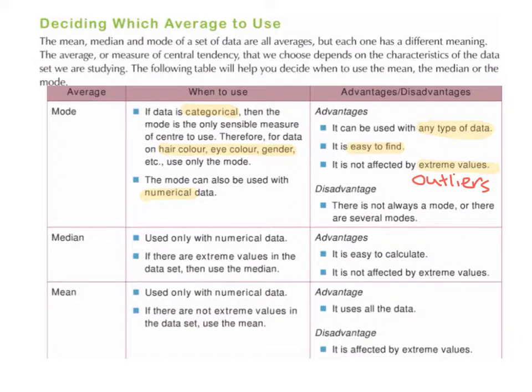So when you're trying to find the mode of the data, having extreme values does not affect the mode. This is very important because extreme values do affect the mean. So extreme values and outliers are very important to talk about when we're talking about which average to use.